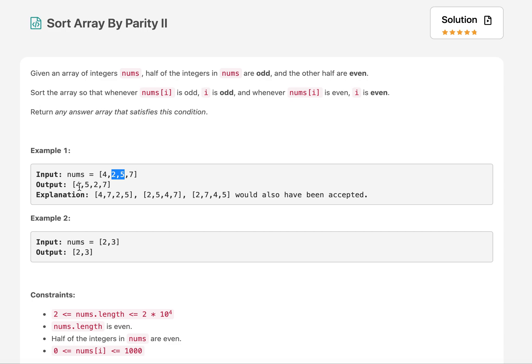So one possibility of our answer would be 4, 5, 2, 7. How is it satisfying the condition? This is the 0th index, this is an even number. This is the second index, this is an even number. This is at the first index, this is an odd number. This is at the third index, this is an odd number. So the condition is satisfied and we are good to return this array. There are other possibilities that do exist. These are also acceptable.